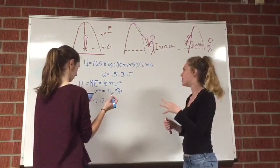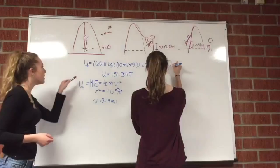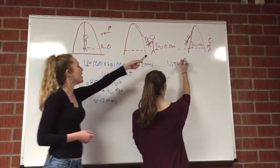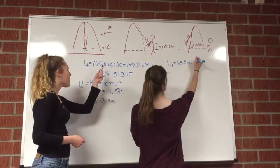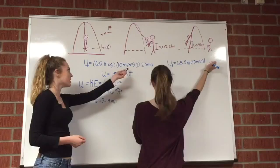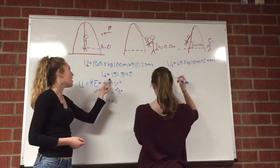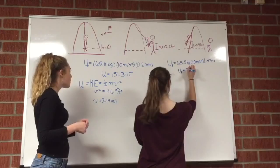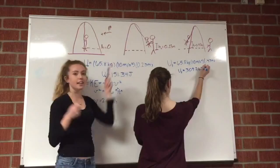This turns into kinetic energy at the bottom, then back into potential energy at the top, but we can ignore the potential energy in the middle. Our first calculation was the initial potential energy at a height of 0.23 meters. We calculated Cassie's mass times the acceleration due to gravity times the height, which is 151 joules.